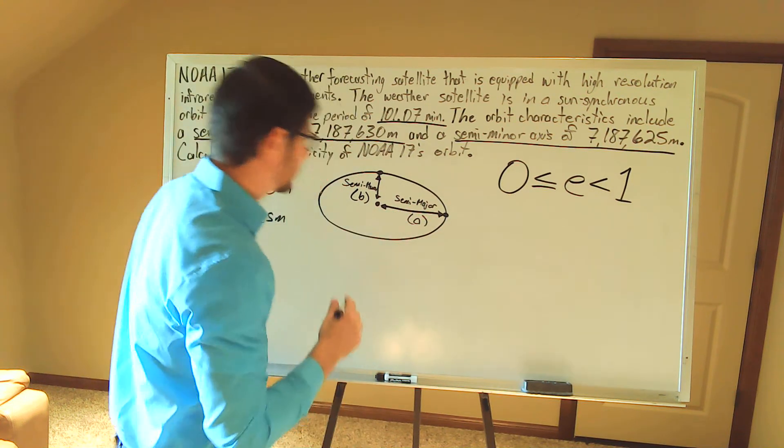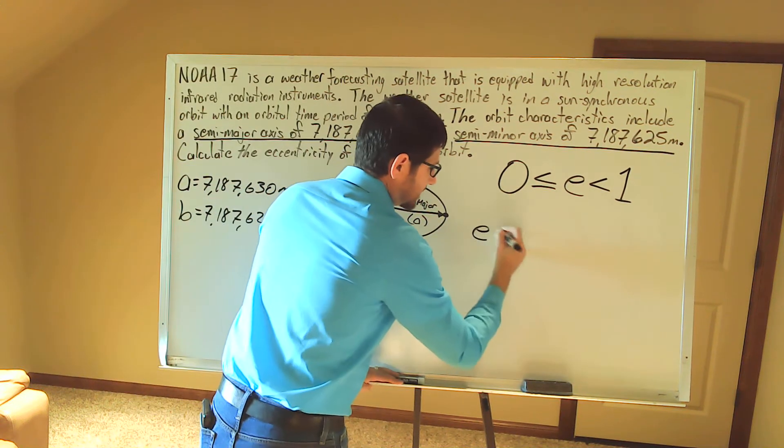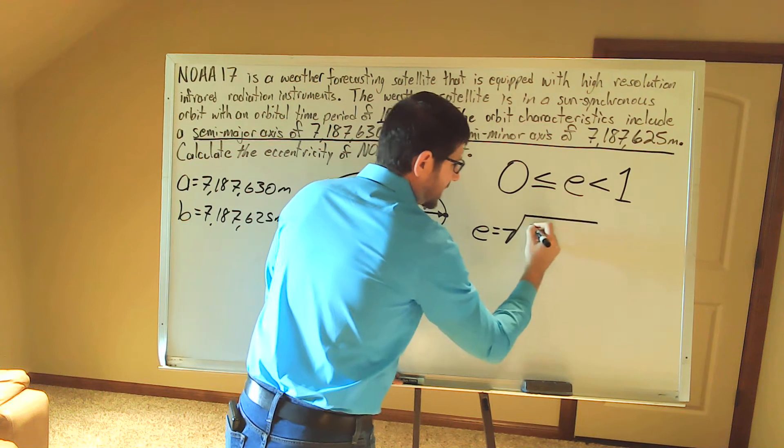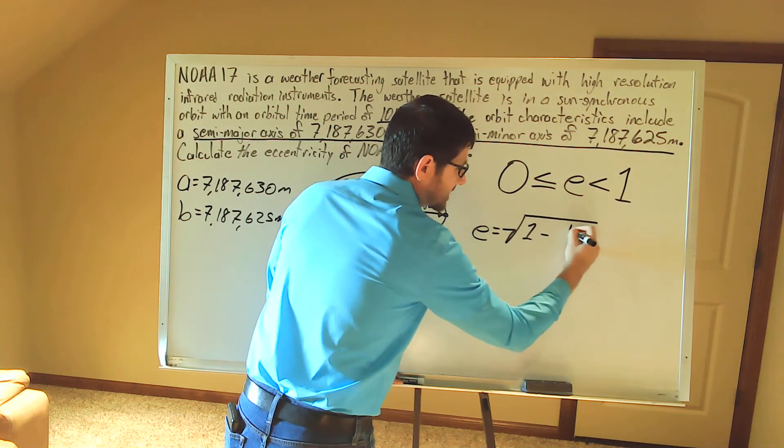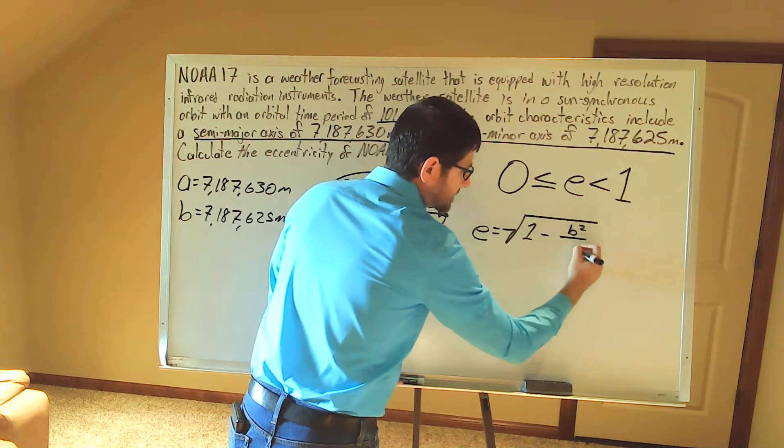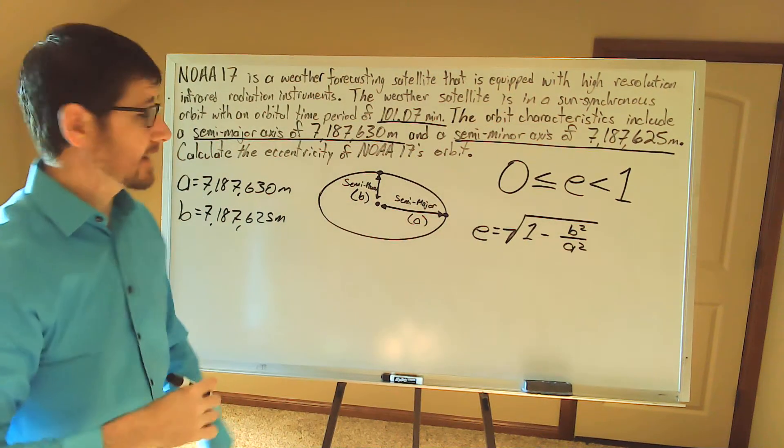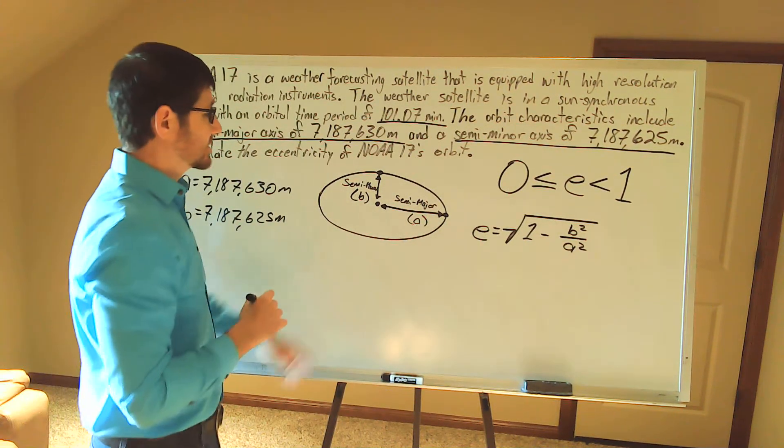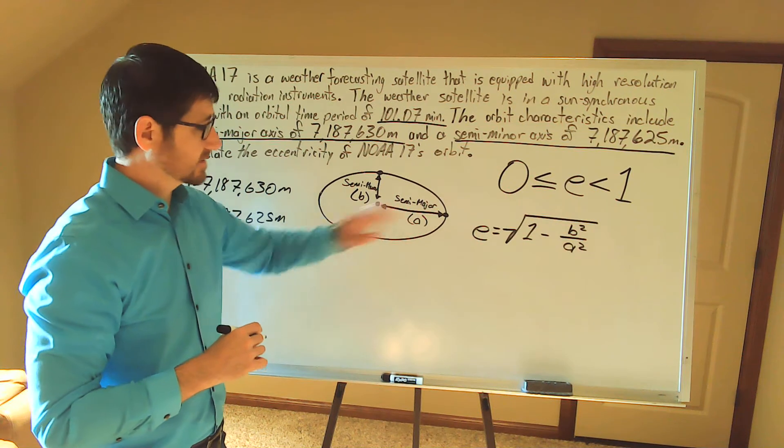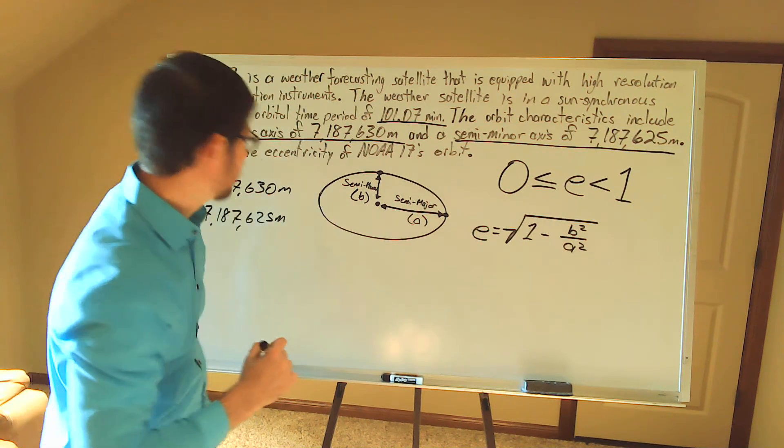Now our equation is going to be the square root of one minus the semi-minor axis squared divided by the semi-major axis squared. So we know both of these dimensions. Let's just go ahead and plug in our values here.